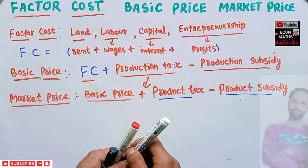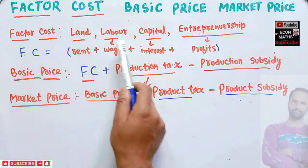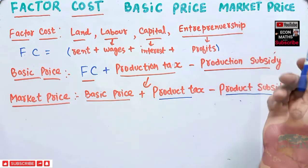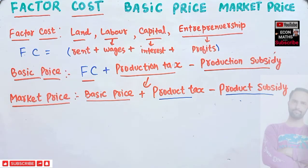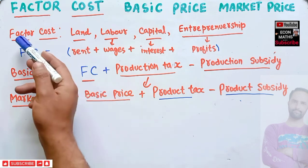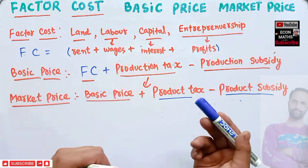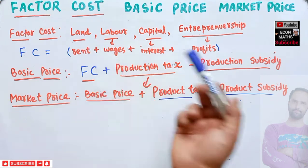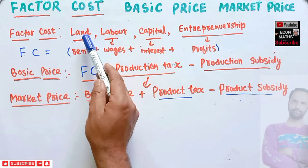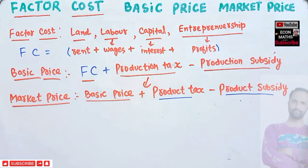In this video we will learn about the concepts of factor cost, basic price, and market price. Factor cost is the cost on the factors of production. The factors of production are: land, labor, capital, and entrepreneurship — these are what we need to produce anything.